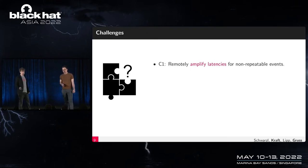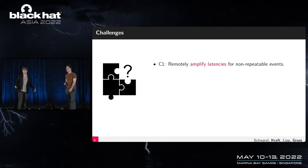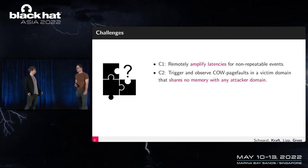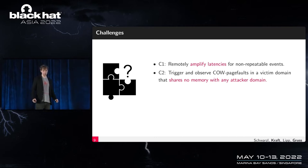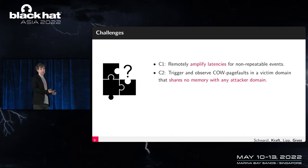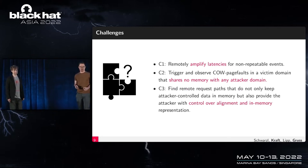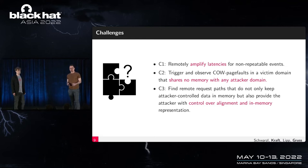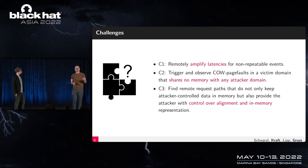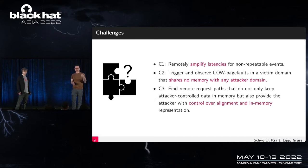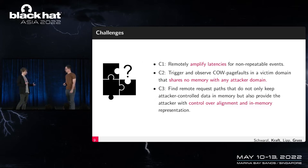The first challenge is to amplify the latency. The second challenge is to trigger and observe copy-on-write page faults while not sharing any memory with the attacker domain. The third challenge — necessary for more powerful attacks like bytewise leakage — is to find remote paths that allow you not only to store data in a page-aligned way, but also to change the alignment of the data you want to leak, enabling bytewise leakage from a database.